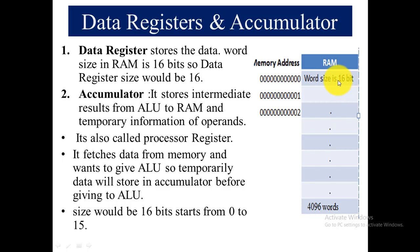The accumulator stores intermediate results from the ALU and temporary information of operations. It is also called the processor register, because all processing requires the accumulator. It fetches data from memory and temporarily holds that data before passing it to the ALU. Its size is 16 bits, from 0 to 15, the same as the RAM data size. So the data register and accumulator are of the same type, both storing 16-bit data from bit 0 to bit 15.